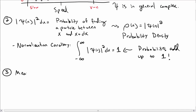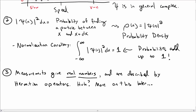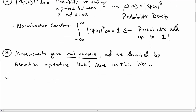Postulate number three is that when you make a measurement, measurements are real numbers, and these measurements are described by objects we're going to call Hermitian operators. For the moment we're not going to really talk about this, so just don't worry about this postulate right now — we'll talk about it later once we've done some more quantum mechanics.